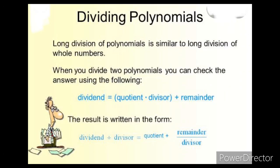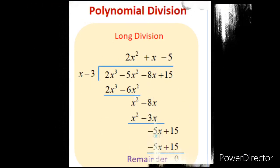Dividing polynomials. It is a long division polynomial similar to long division of whole numbers. You can check your answer by this formula: Dividend equals to quotient plus divisor plus remainder. The result will be written in the form of dividend plus divisor equals to quotient plus remainder divided by divisor. Is it clear to everyone dividing polynomial?